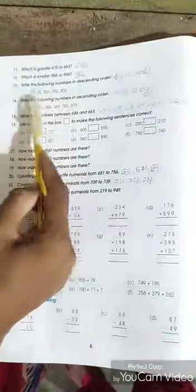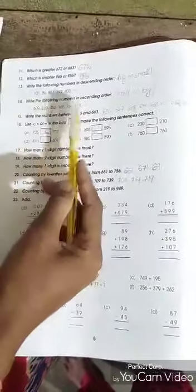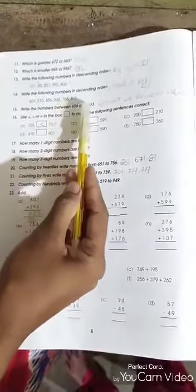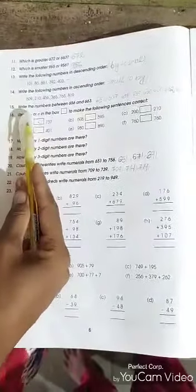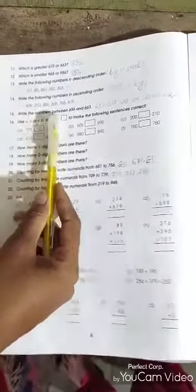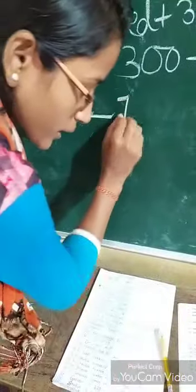Write the following numbers in descending order — descending means big to small. Then write the following numbers in ascending order — that means small to big. After that, write the numbers between 656 and 663. Then use symbols — smaller than, greater than, or equal to.